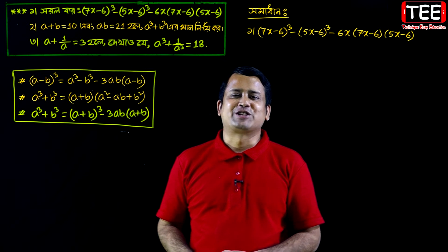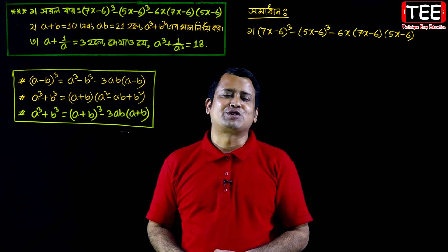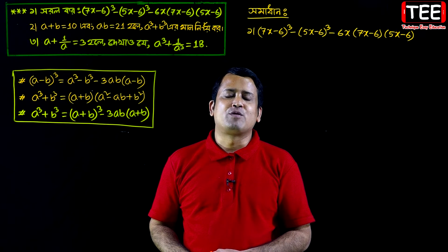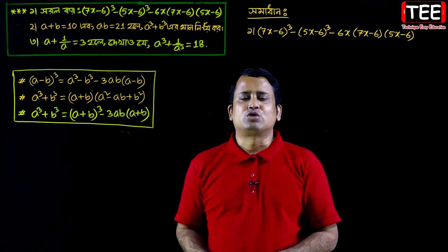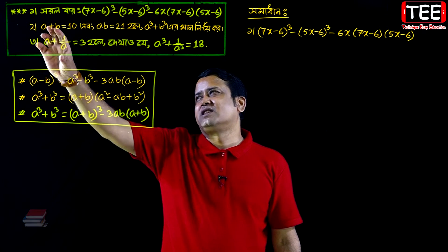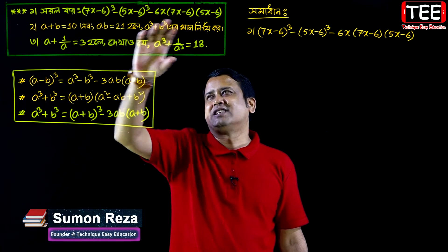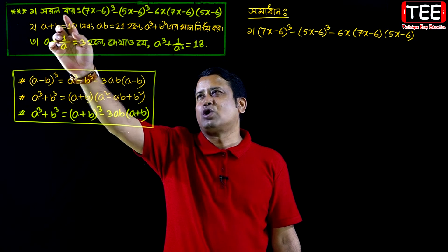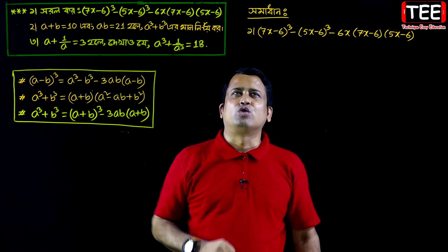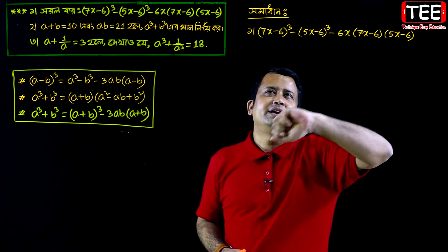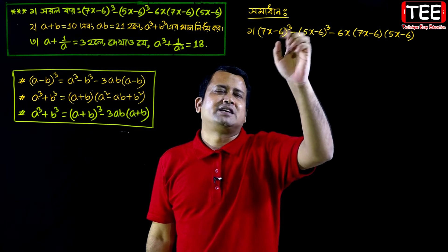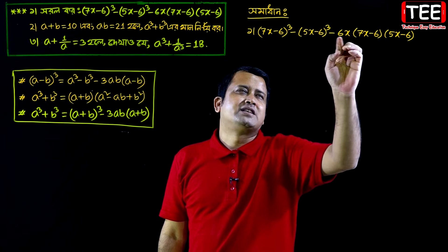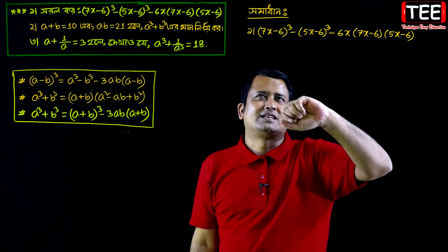Thank you so much for joining us. We have the expression: 7x minus 6, whole cube, minus 5x minus 6, whole cube, minus 6x into 7x minus 6 into 5x minus 6.